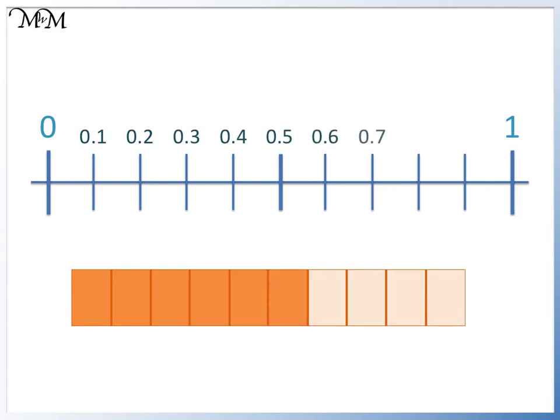0.6, six-tenths, 0.7, seven-tenths, 0.8, eight-tenths, 0.9, nine-tenths, and finally one, which is ten-tenths, or one whole.